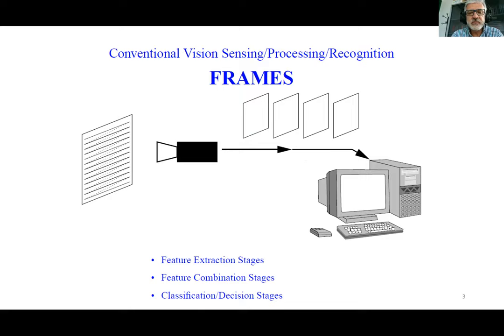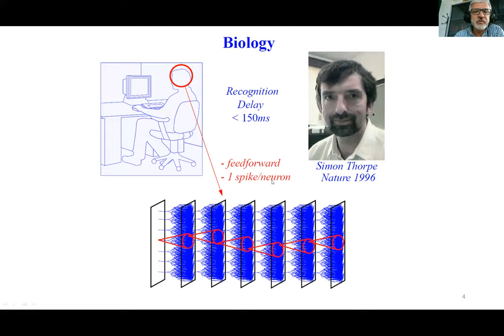As an introduction, conventional artificial vision systems are typically based on cameras that take images one after the other, and each image is processed by a computing platform to extract features, combine features, and do object detection, classification, recognition, and decision. All this is very computing hungry. Biological brains work in a completely different way. We don't take pictures; our brain does not process one picture after the other. Everything is more continuous. The retina layer is followed by a sequence of layers in the brain that communicate spikes asynchronously, projecting spikes from one layer to the next to do processing.